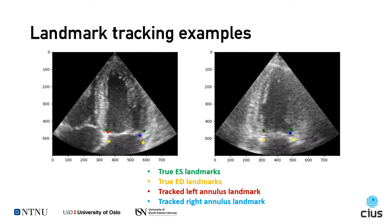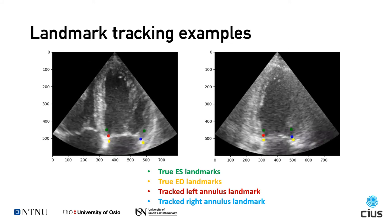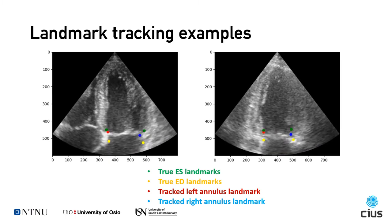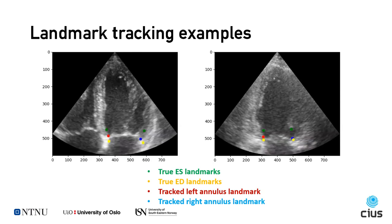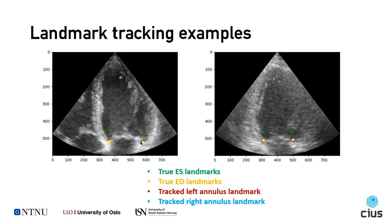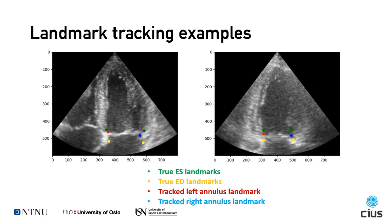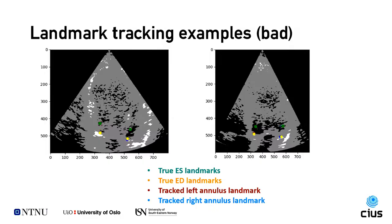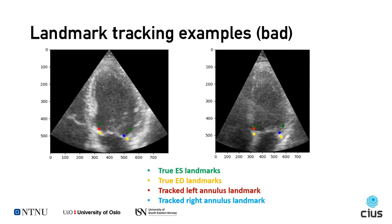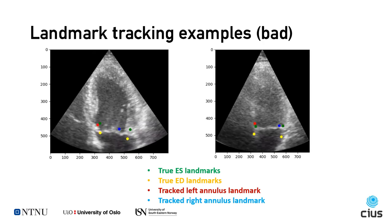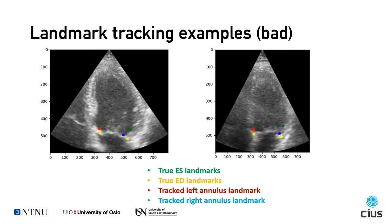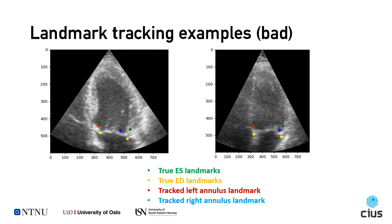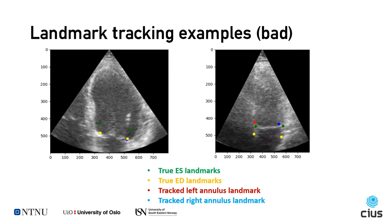Here are two examples of tracking the annulus landmarks using this optical flow-type neural network. The green points are the true annotated end-systole landmarks, while the yellow points are the true end-diastole landmarks. The moving red and blue points are the tracked annulus landmarks. Here are two more examples where the landmark tracking is less optimal, where you can see that the tracked points are drifting away from the true green annotated points.